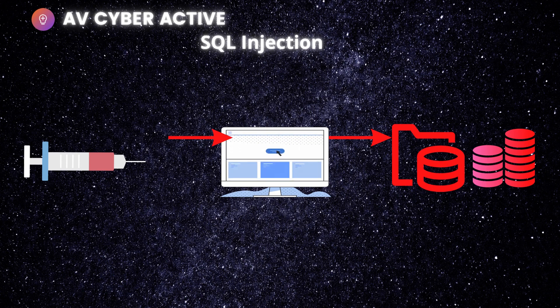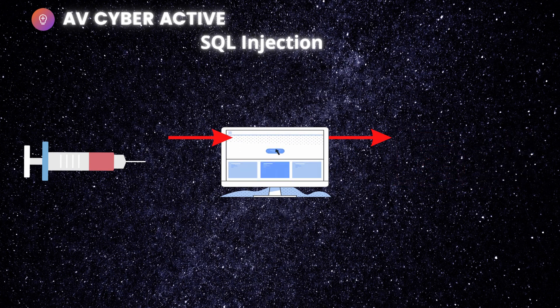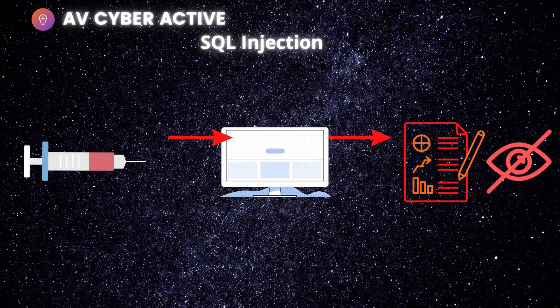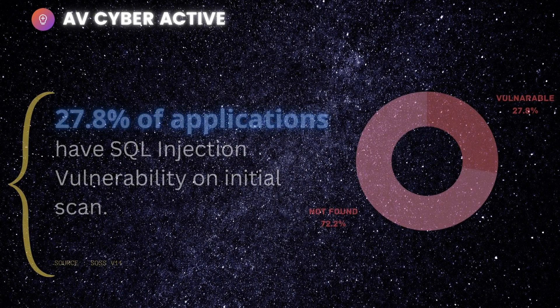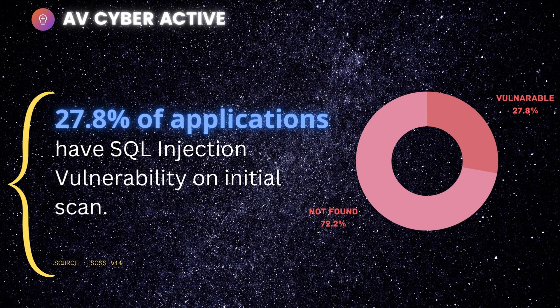What makes it so dangerous is the security vulnerability that exists in the website and database — it allows the attacker to interfere with queries that an application makes to its backend database, generally allowing an attacker to view data not normally retrievable. About 27.8% of all applications have a SQL vulnerability on an initial scan — more than 25% are just sitting there, vulnerable and ready to be attacked.